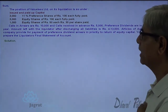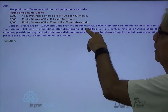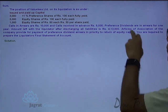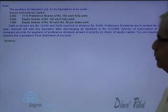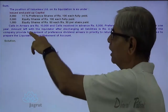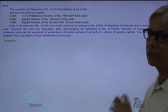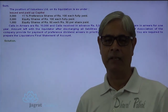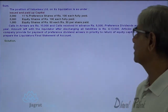Calls in arrears: 10,000. Calls received in advance: 5,000. Preference dividend is in arrears for one year. Amount left with the liquidator after discharging all liabilities is 4,13,000 — so cash balance available with the liquidator is 4,13,000.